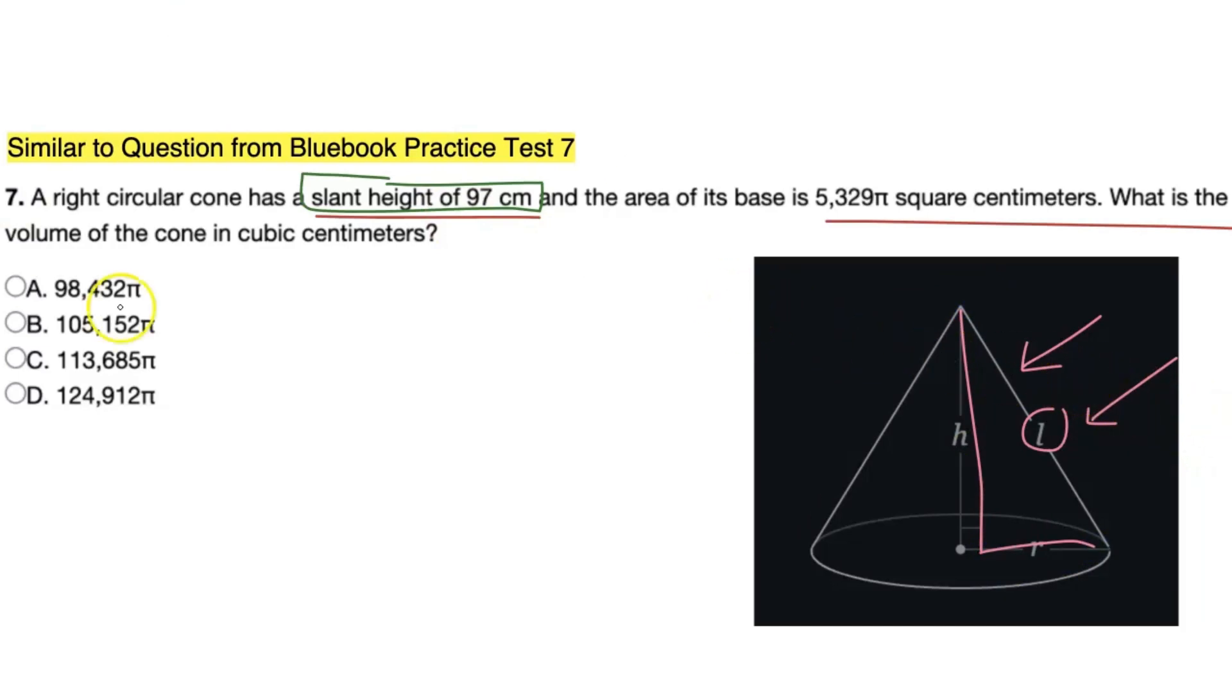You'll recognize that the slant height actually makes a right triangle with the height and the radius. We're going to utilize that to find a couple values in the future. But the first thing I want to do is actually find the radius, because currently we don't know the radius, but it's pretty easy to find. The base area which is given is equivalent to πr². Always have your units, just be cool.